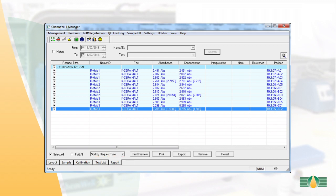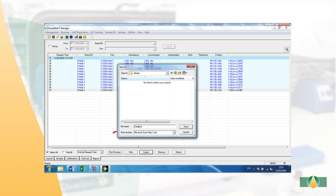To export results, highlight the results in the report tab, select export, then input a file name. Select Microsoft Excel files and select save.